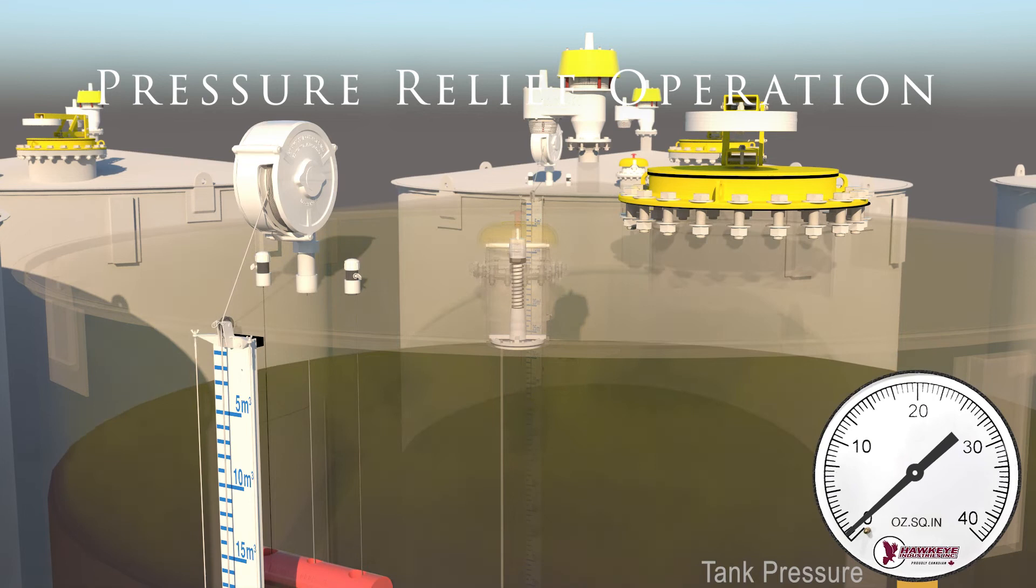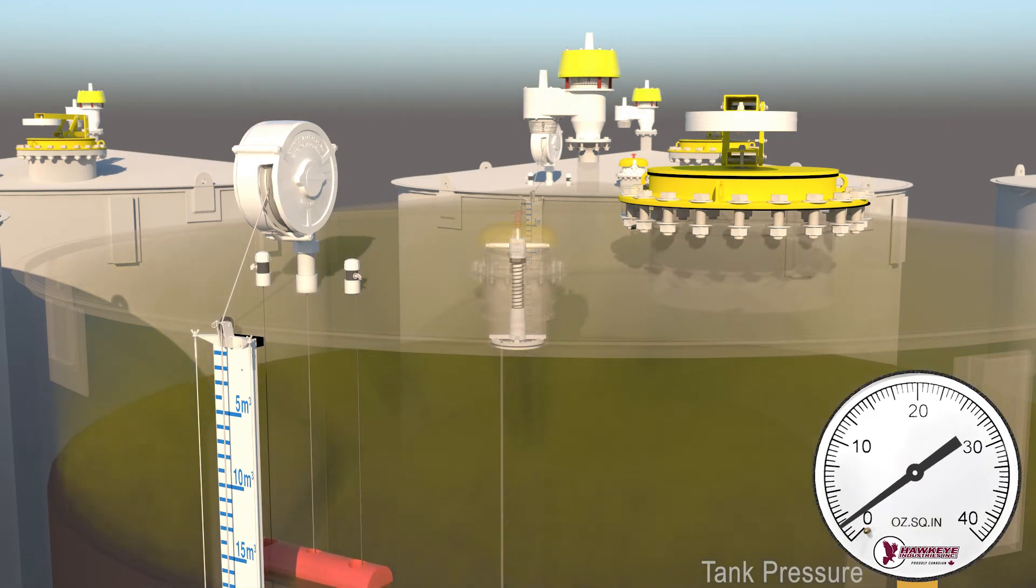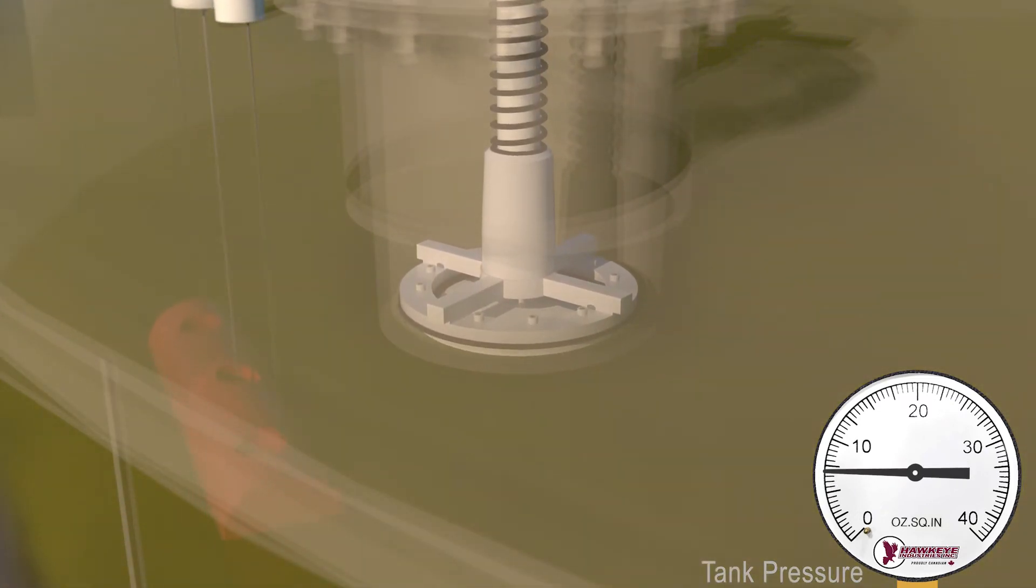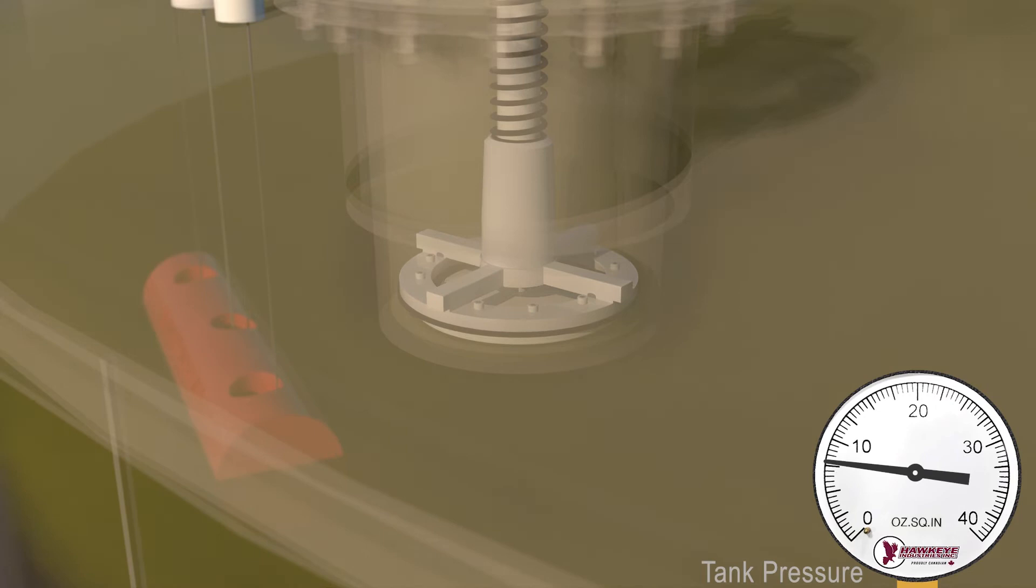As fluid flows into the tank, the internal pressure increases. In order to reduce emissions, the spider cage must not lift prematurely or leak below its set pressure. When tank pressure exceeds the 6 ounce per square inch set pressure, the spider cage lifts and allows gas from the tank to escape.